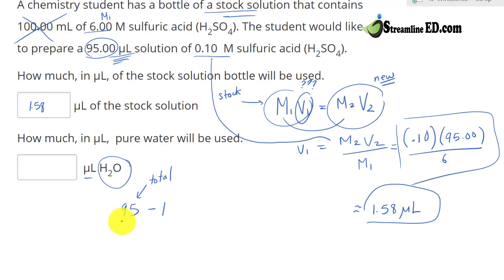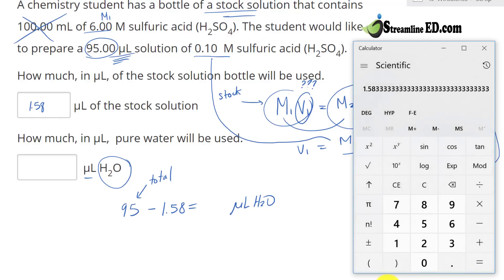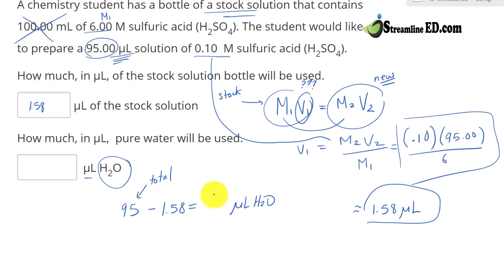But this total right here is made up of the stock solution and pure water. So we just minus, and this gives you the microliter in water. And this gives us 93.42.